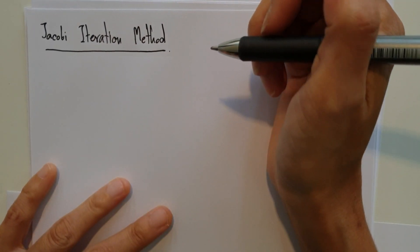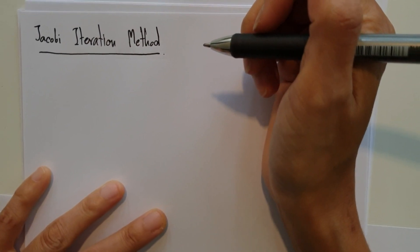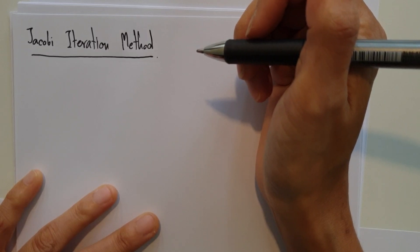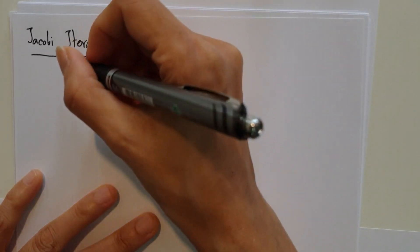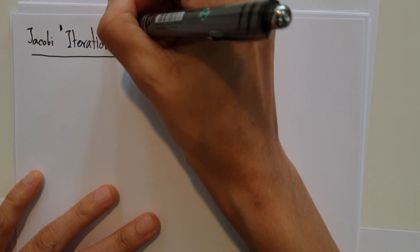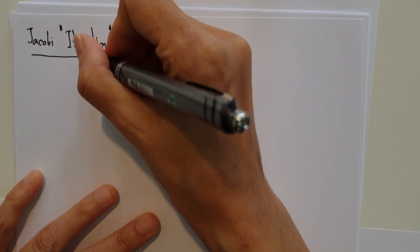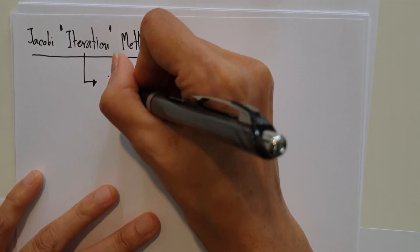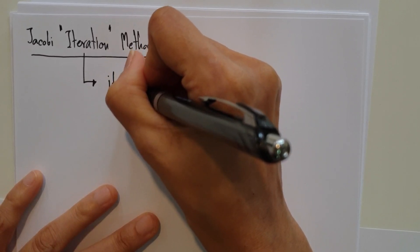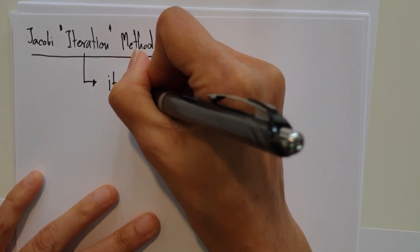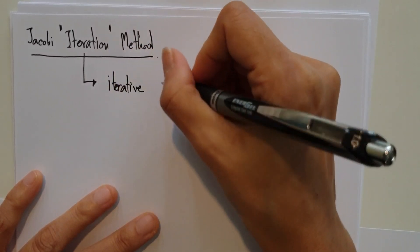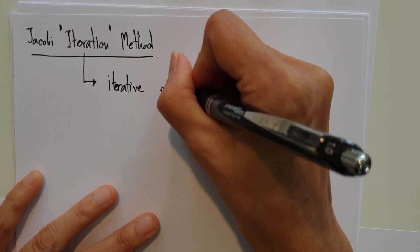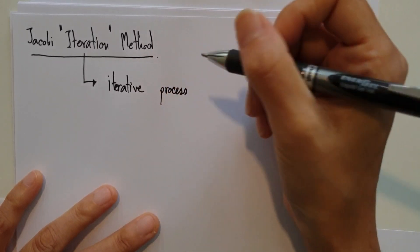Okay, let's start with the next technique. It is the Jacobi iteration method. So when you see the word iteration, it's implied that in this process there is an iterative process inside.